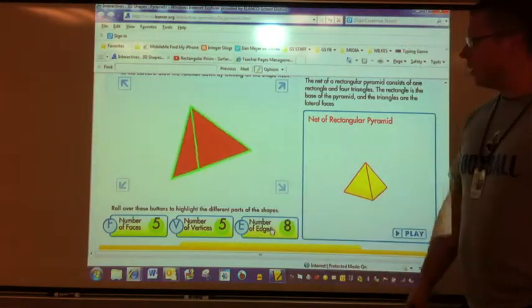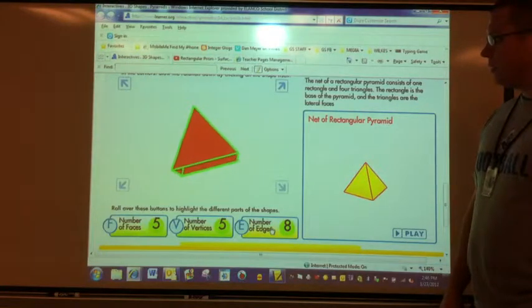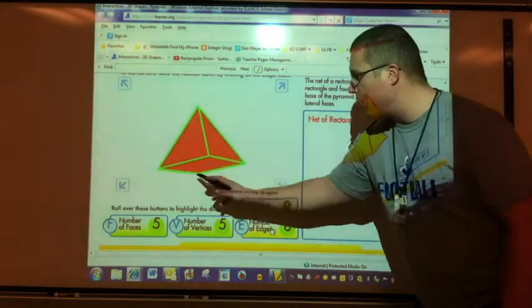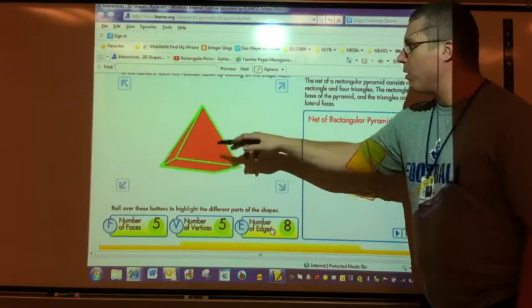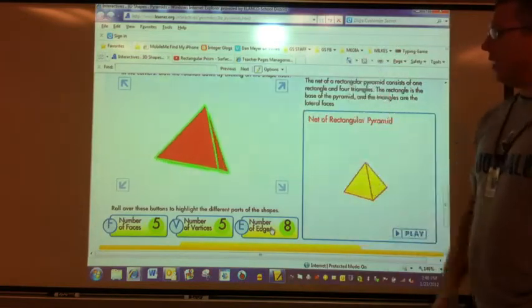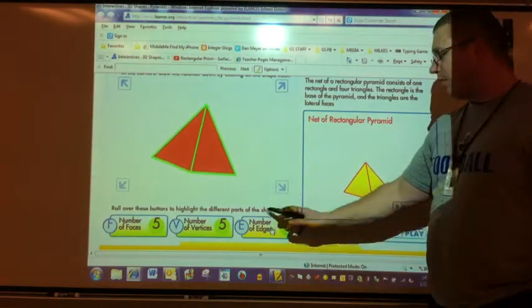Number of edges. Click on the edges. If you count the bottom, I have four on the bottom, and four going on an angle upward. It gives me a total of eight.